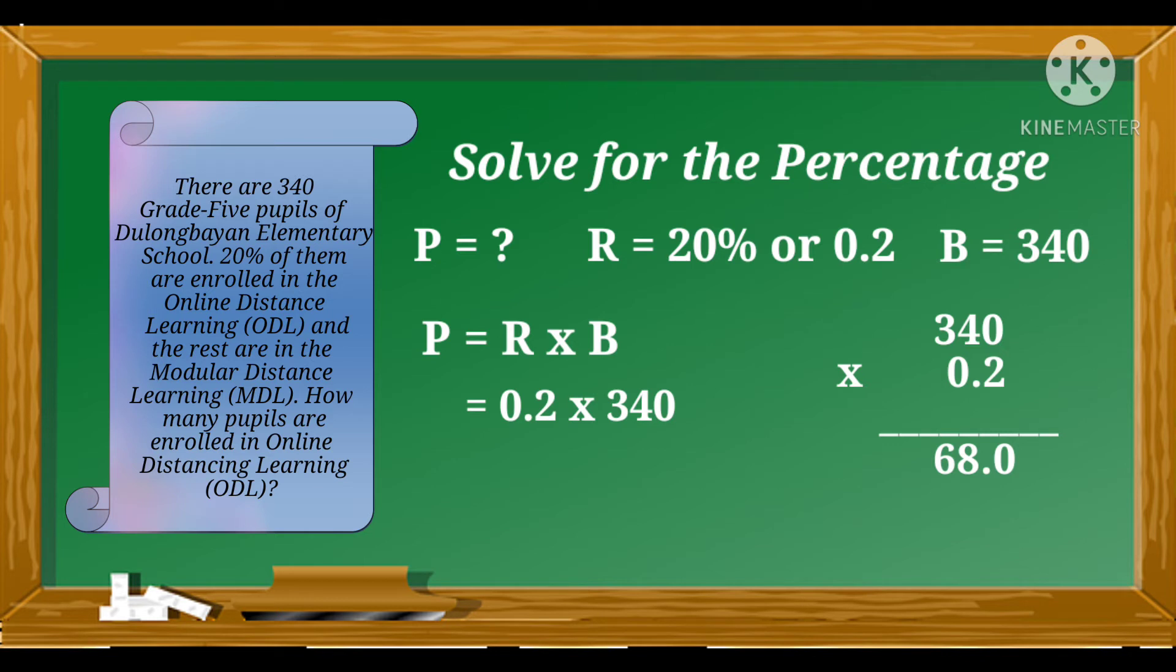Then, three times two is equal to six. Next, count the decimal places. In our factors, we have one decimal place. So, we can omit one zero in our product.